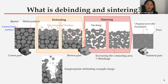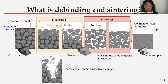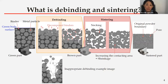The decomposition is progressing from the surface of the green part. So the thicker the green part is, the longer it takes to decompose the binder. Additionally, if a sudden aggressive debinding reaction occurs there will be deformation. The gradual decomposition progress is important to achieve the tight tolerance requirement. So the debinding process is the most time-consuming process in the whole MIM process.